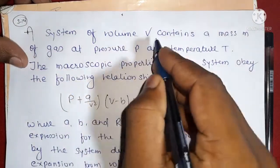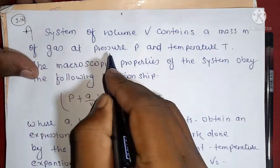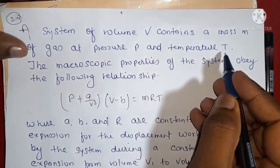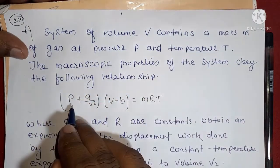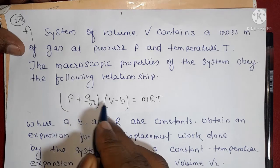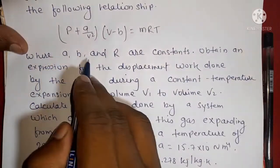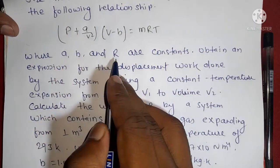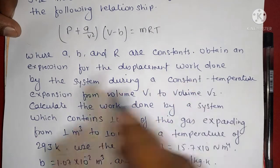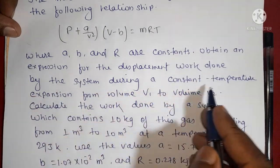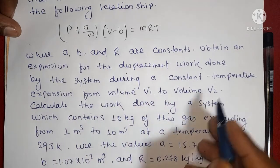A system of volume V contains a mass of gas at a pressure P and temperature T. The microscopic properties of the system obey the following relationship: (P + A/V²)(V - B) = MRT, where A, B, and R are constants. Obtain an expression for the displacement work done by the system during a constant temperature expansion from volume V1 to volume V2.